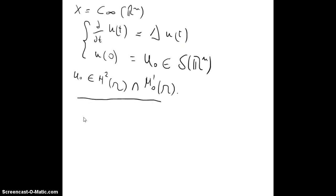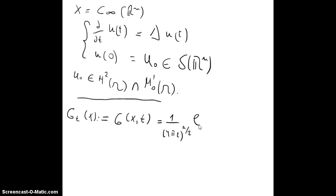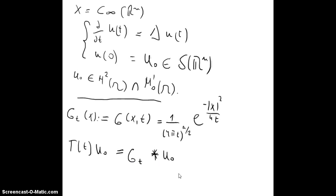We define the heat kernel function g(t, x) as: g(x, t) = (1 / (4πt))^(n/2) * e^(−|x|² / (4t)). And one can define the semi-group T(t) u_0 as the convolution of g_t with u_0.